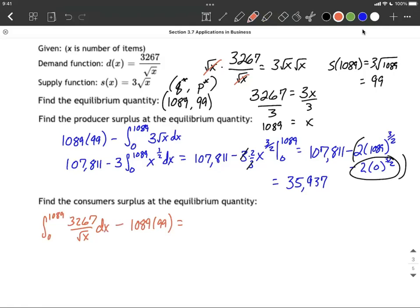I'm going to go ahead and rewrite this so it looks a little bit nicer. I'm going to bring that constant out in front, 3267, and then the integral between 0 and 1089, and instead of having the square root of x in the denominator, I'm going to go ahead and use a few of our exponent rules, thinking about that square root as being to the one-half power, then I can move it up to the numerator by making it a negative exponent.